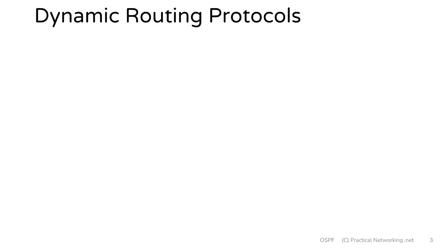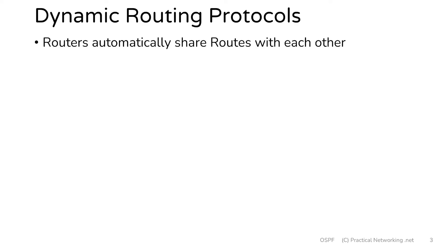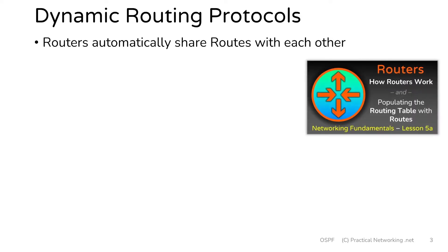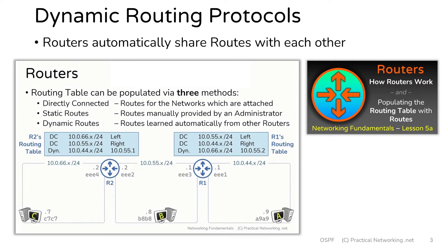The ultimate purpose of a dynamic routing protocol is for routers to automatically share routes with one another. We introduced this concept in a previous video where we discussed how routers work and how they populate the routing table. That video showed three different methods for a router to populate its routing table: directly connected routes, static routes, and dynamic routes.